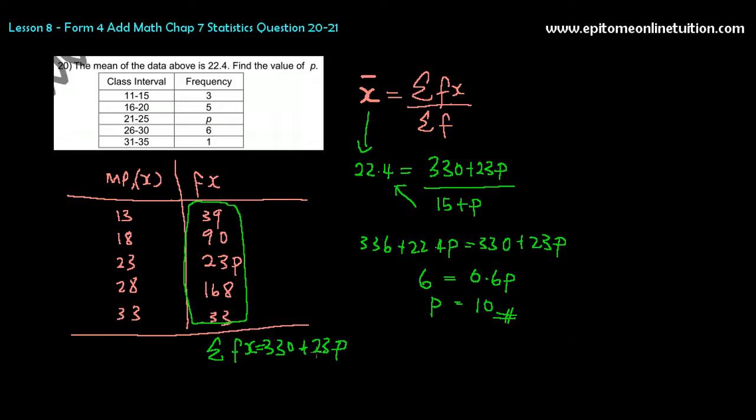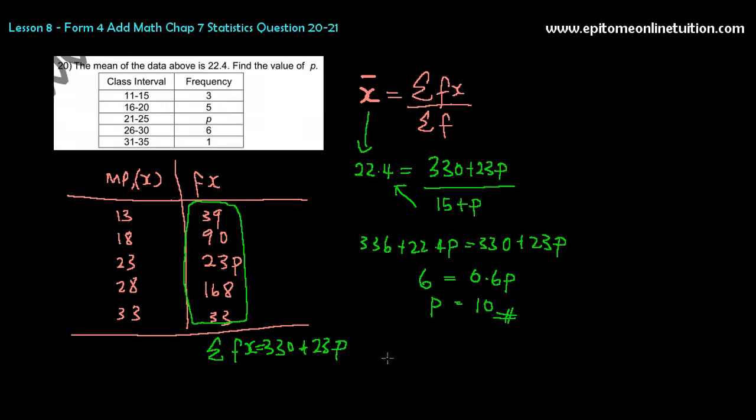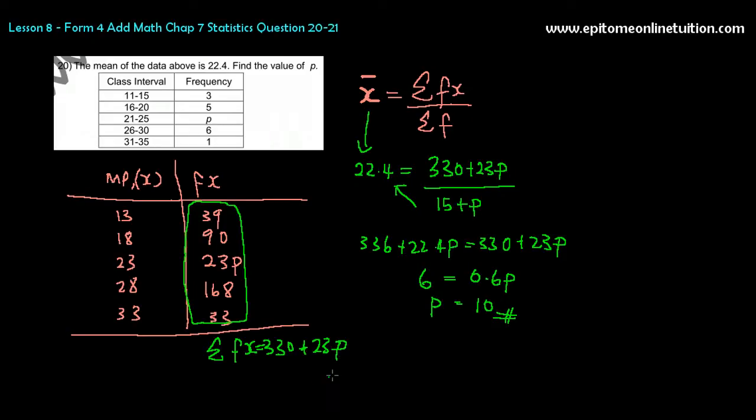It is not possible for you to have the first data, the second data, the third and the fourth and the half data. Frequency must always be a whole number and it cannot be negative. So that is how you find mean or the reverse of mean to find an unknown if the mean is given.